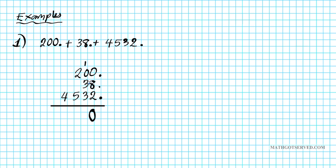1 + 0 is 1 + 3 + 3 is 7. Put that down. Now we move over to the hundreds place. 2 + 5 is 7. And then for the thousands place, we just have a 4.